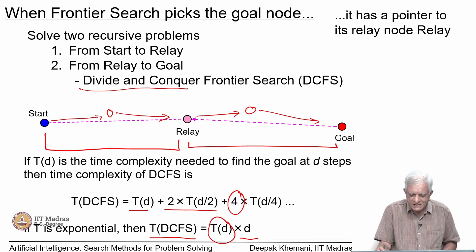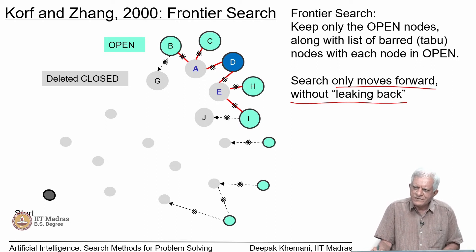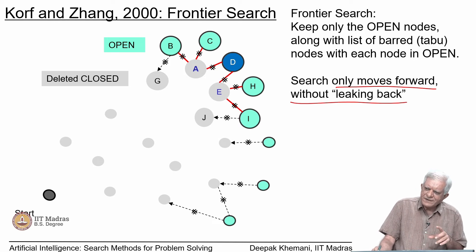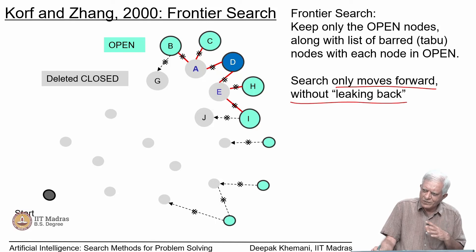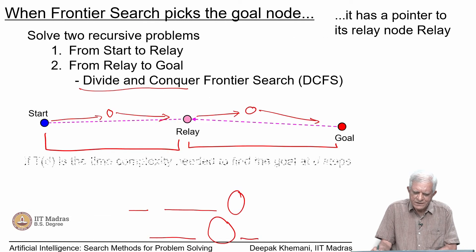A student asks: we are creating a list of barred nodes — associating an identifier with every node. That will also take some space. The open list has a certain space requirement, and every node will have a constant number of neighbors at most which are on it. So it will get multiplied by a constant factor, not linearly in the sense that it does not depend on depth. If the space requirement for open is N nodes, this will become like N times two or N times three depending on how many barred neighbors you are storing. So yes, it will be inflated by a constant amount.